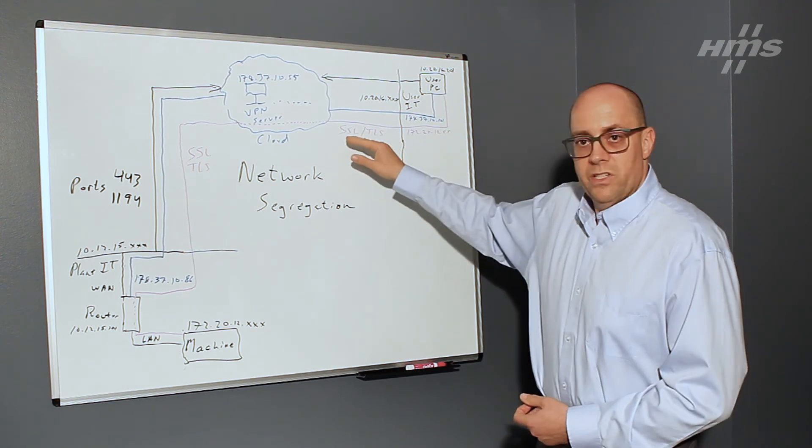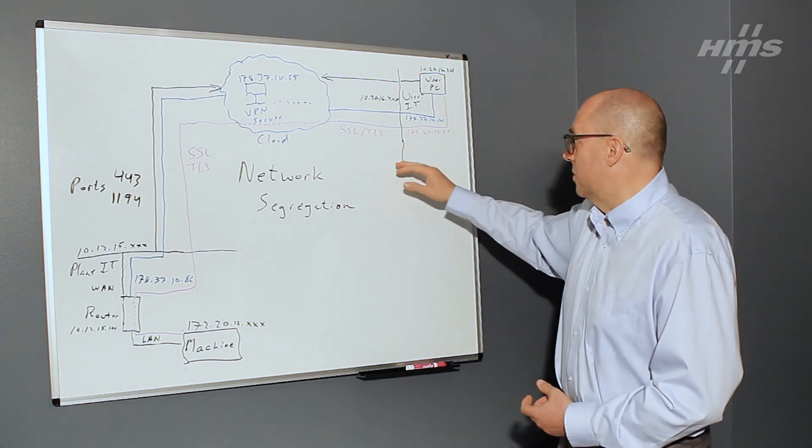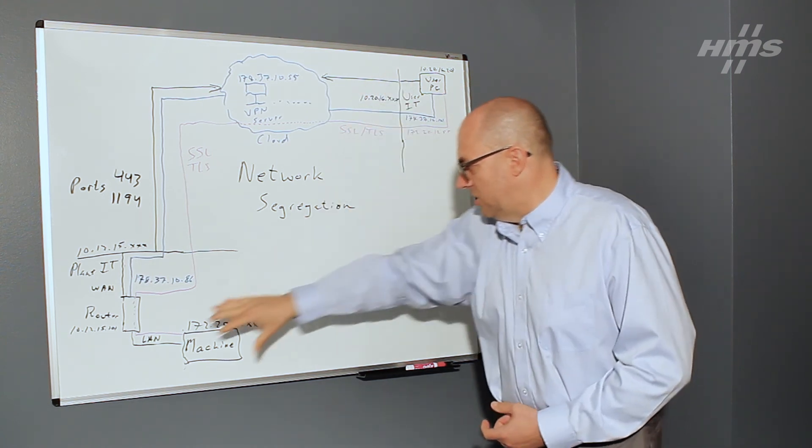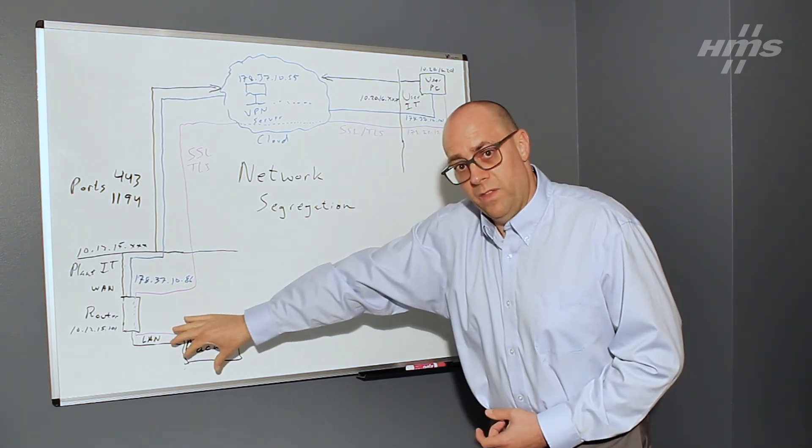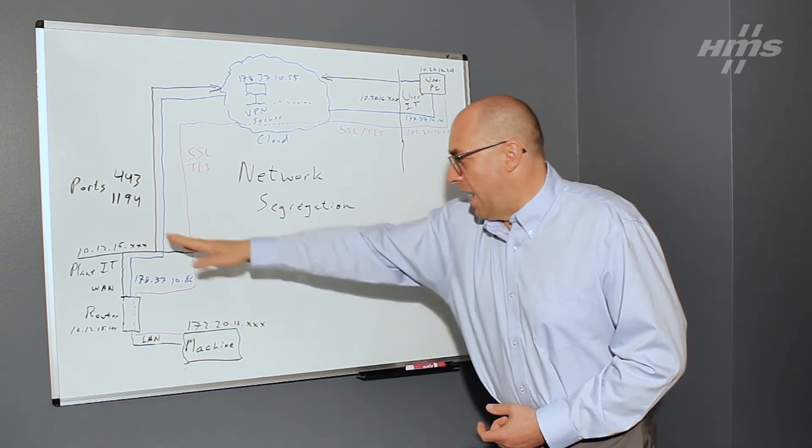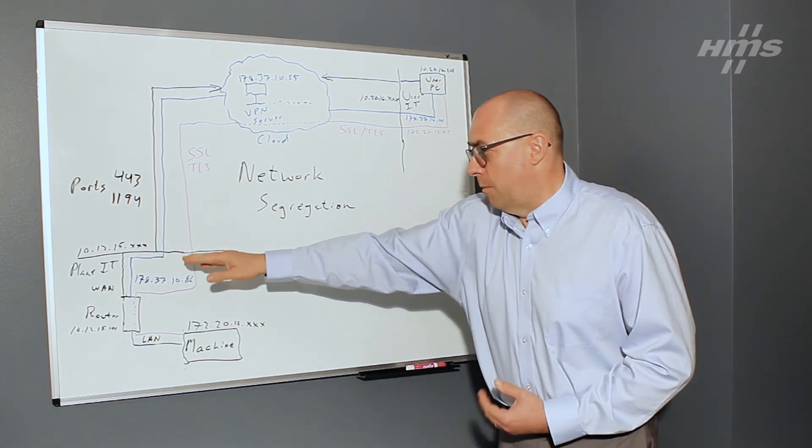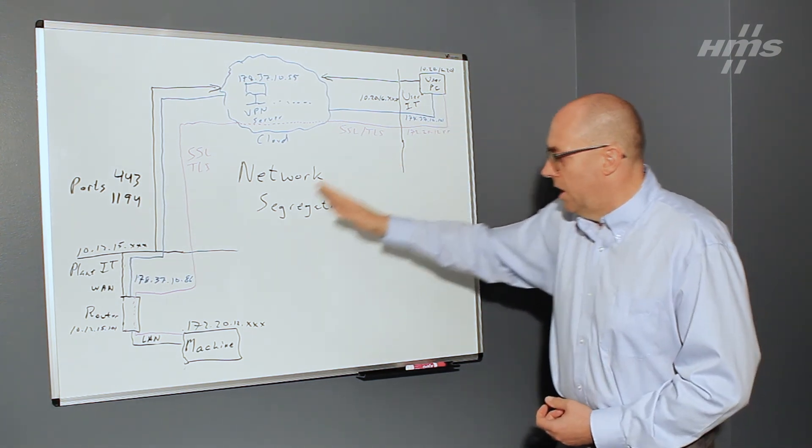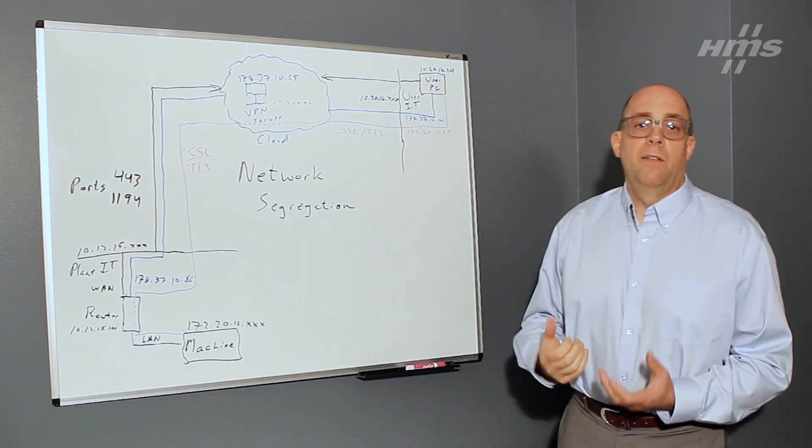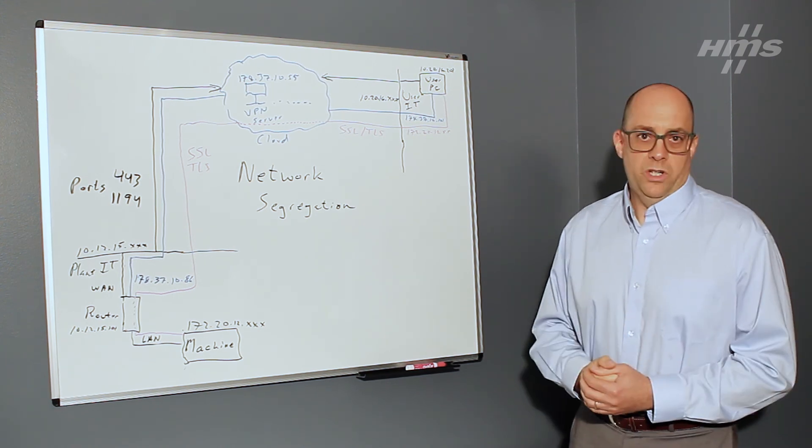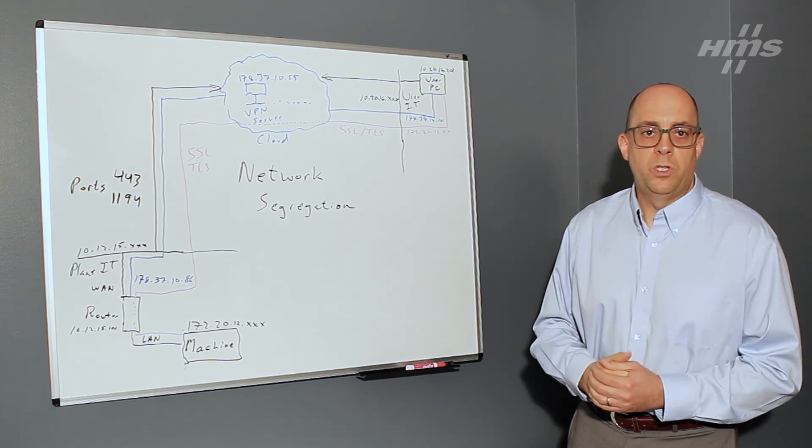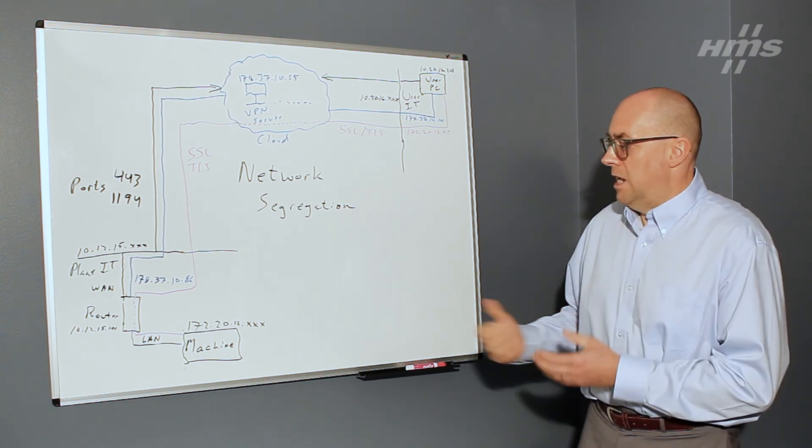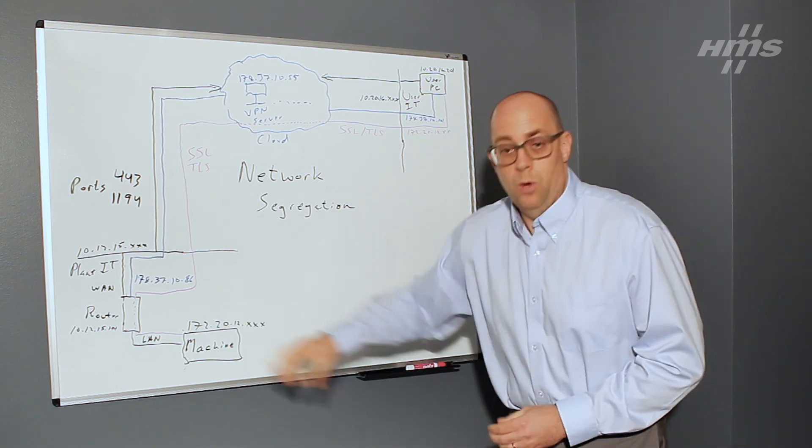All this is occurring over SSL, TLS, encrypted communications. So essentially what I've created here is I've created a virtual IP address that virtualizes this PC down here on this LAN at this machine level. But I have two degrees of separation away from my IT network here. So once again, this enables the user to connect to the host without any kind of exposure to the IT network. And this is what network segregation is. And this is how it helps protect your IT networks from your plant level and keep basically applications isolated to the host network.